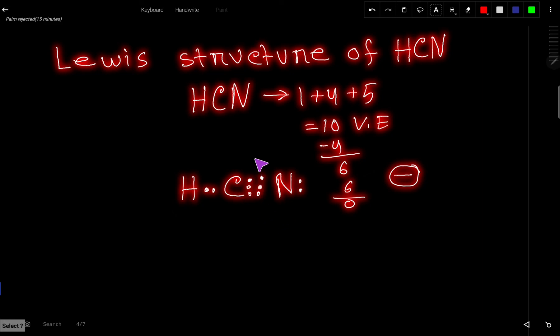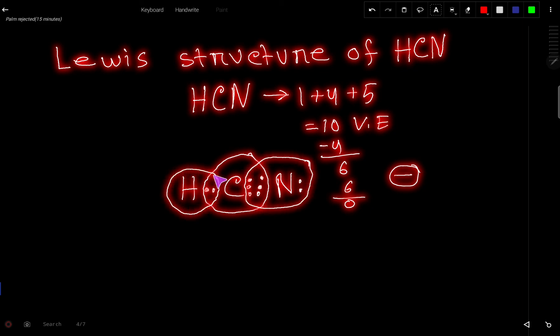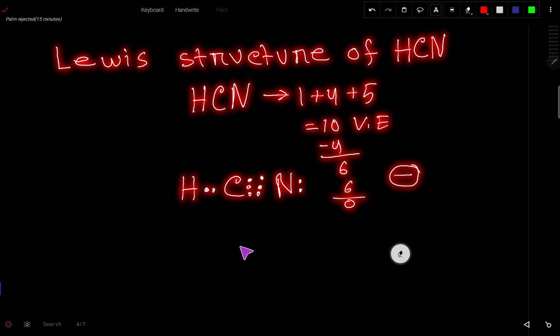So now this carbon has eight valence electrons. This nitrogen also has eight valence electrons and this hydrogen has two valence electrons. So this is the Lewis structure of HCN. We can express this bond pair as dashes.